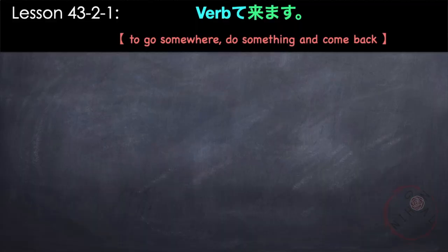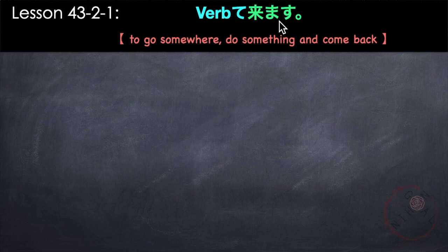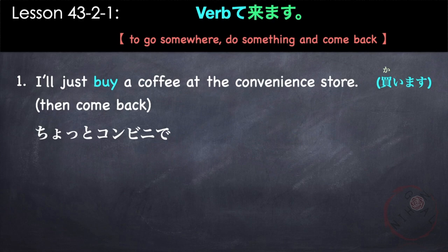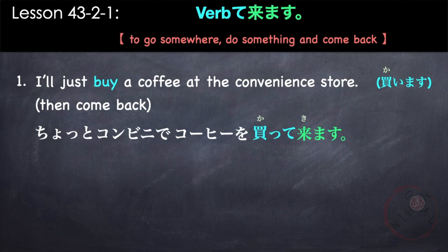The first usage of verb te kimasu means to go somewhere, do something, and then come back. For example, 'I'll just buy a coffee at the convenience store and then come back.' Our verb is kaimasu, to buy. Chotto, kombini de kouhi wo katte — kaimasu in te-form becomes katte — followed by kimasu. Chotto, kombini de kouhi wo katte kimasu.